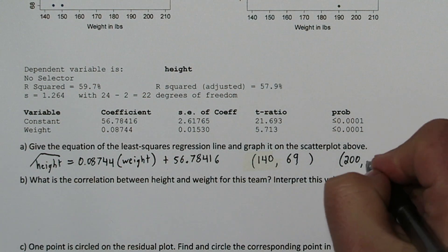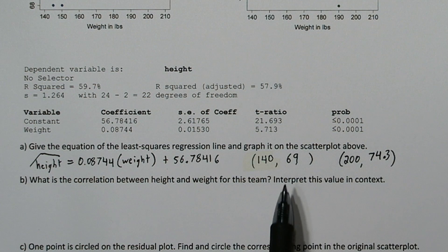Now when we do the same thing for 200, we end up getting a value of about 74.3. So here's two points that we can connect to create the graph of our least squares regression line.